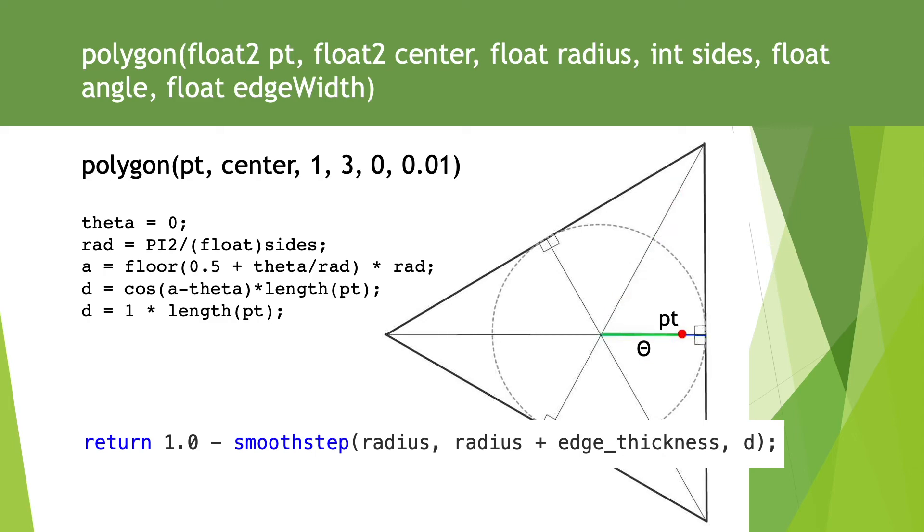At the blue line, where theta is 0, only lengths of PT under radius will pass the smooth step test. Near the corner, lengths of PT double the radius will pass because this length has been halved using the cosine value.